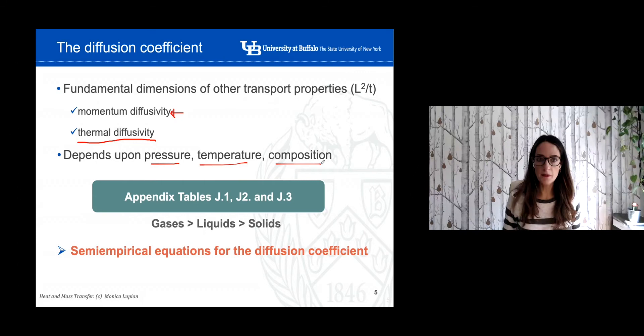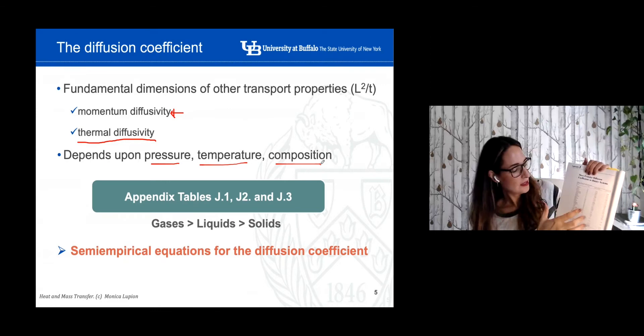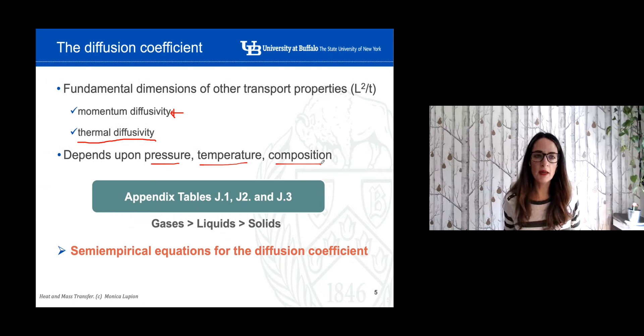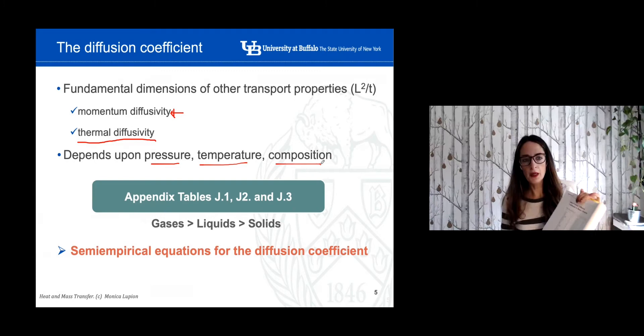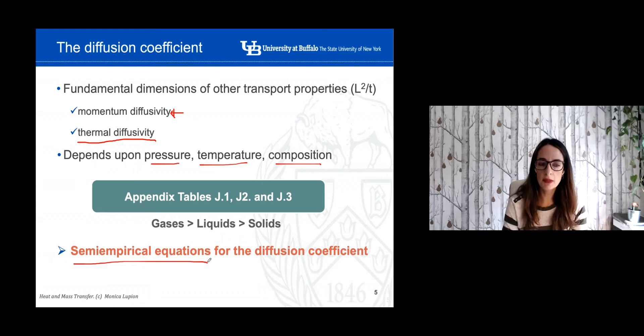In the table, we have examples of binary systems, so you have to look for, say, air and then a second element. That makes things a little more complicated, and we don't have a lot of diffusion coefficients listed in this table. That's why, if you have to solve a problem and need the diffusion coefficient, first try to find the values in the table for the binary system. But in most cases you will have to determine or calculate the diffusion coefficient, and for that we'll define a number of semi-empirical equations.